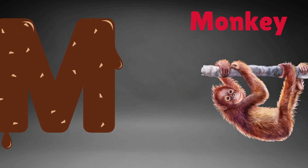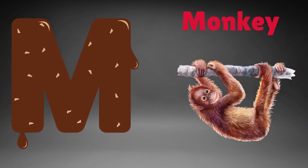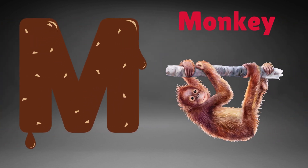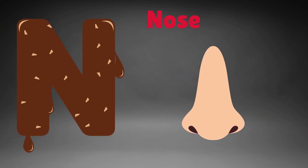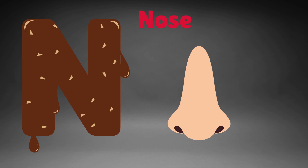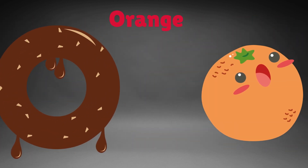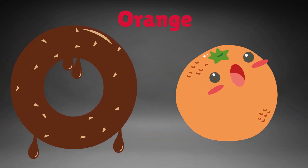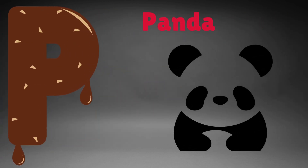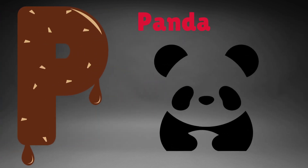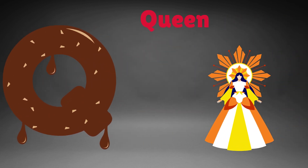M is for monkey, m-m-monkey. N is for nose, n-n-nose. O is for orange, o-o-orange. P is for panda, p-p-panda.